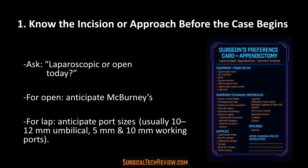For an open appendectomy, think: McBurney's or Rocky-Davis incision, army-navy retractors, Babcock or Allis clamps, ties, ligatures, and suture for stump inversion. For a laparoscopic case, consider port sizes — do you need a 12mm umbilical port? Do you have both 5mm and 10mm trocars ready? This is also a great time to review the anatomy and instrument list. Even a 30–60 second review beforehand can dramatically improve how smoothly you assist.